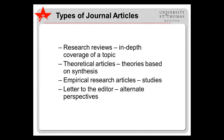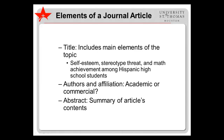Now let's look at the elements of a journal article. Start with the title. Academic work, such as journal articles, usually have straightforward titles that capture in a few words the main elements of the topic the article is about. For example, 'Self-Esteem, Stereotype Threat, and Math Achievement among Hispanic High School Students' will be about three variables — self-esteem, stereotype threat, and math achievement — in a specific population: Hispanic high school students. Although the title doesn't always give you a clue about what type of article it will be — review, theoretical, empirical — sometimes it does.